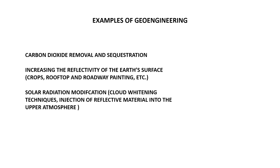Examples of geoengineering include the construction of systems designed to remove carbon dioxide from the atmosphere and to sequester it deep underground, changing the earth's albedo or reflectivity by planting crops that are light in color over large areas, or painting roofs and roadways white to reflect more sunlight.